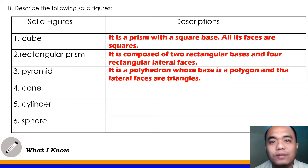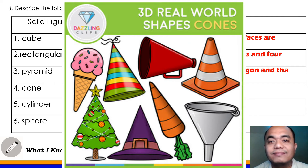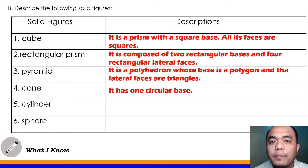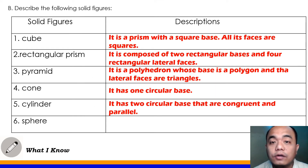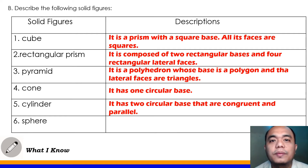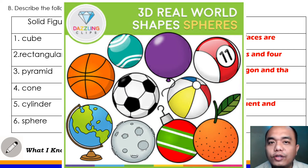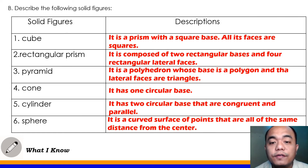Next, cone — it has one circular base. Cylinder — it has two circular bases that are congruent and parallel. Number 6, sphere. The sphere — how do you describe sphere? It is a curved surface of points that are all of the same distance from the center.